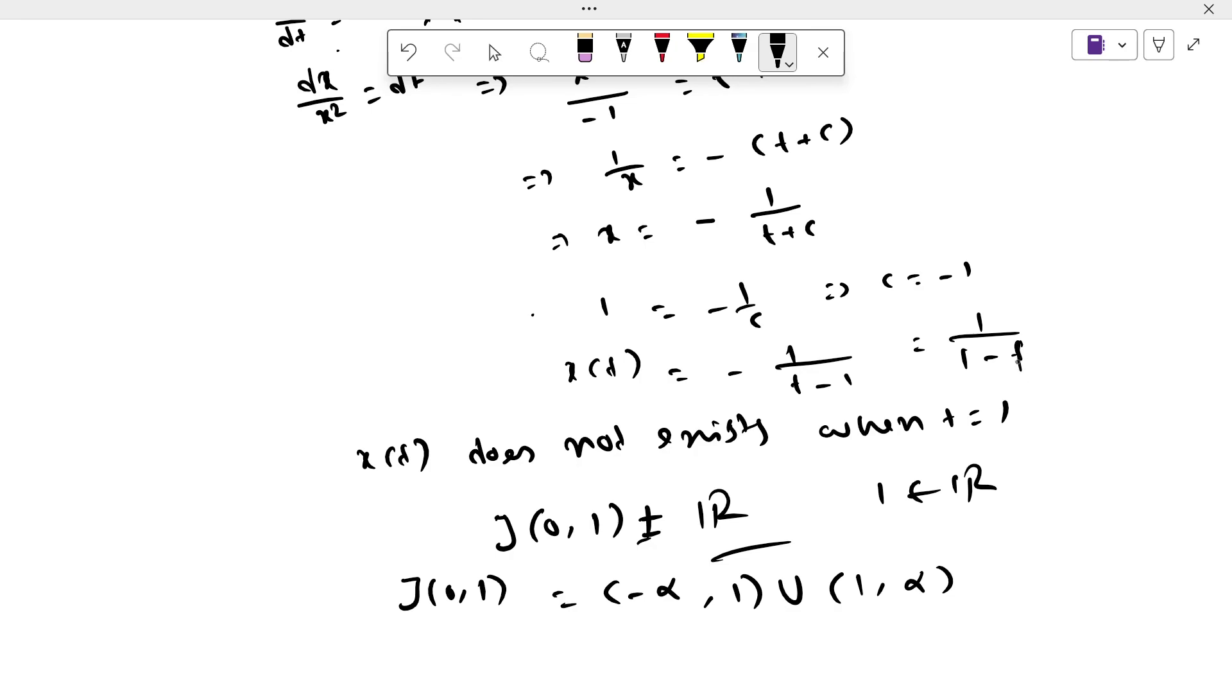It does not exist at 1 but exists at every point except 1. So we remove 1 from the real numbers. J(0,1) is basically a union of two open intervals, so it should be open.